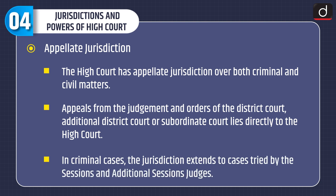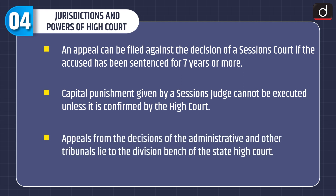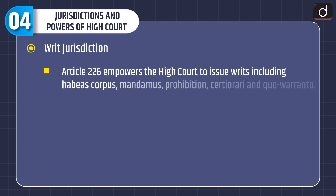The High Court has appellate jurisdiction over both criminal and civil matters. Appeals from judgments and orders of the District Court, Additional District Court or Subordinate Court lie directly to the High Court. In criminal cases, jurisdiction extends to cases tried by the Sessions and additional Sessions judges. An appeal can be filed against the decision of a Sessions Court if the accused has been sentenced for 7 years or more. Capital punishment given by a Sessions judge cannot be executed unless confirmed by the High Court. Appeals from decisions of Administrative and other Tribunals lie to the Division Bench of the State High Court.